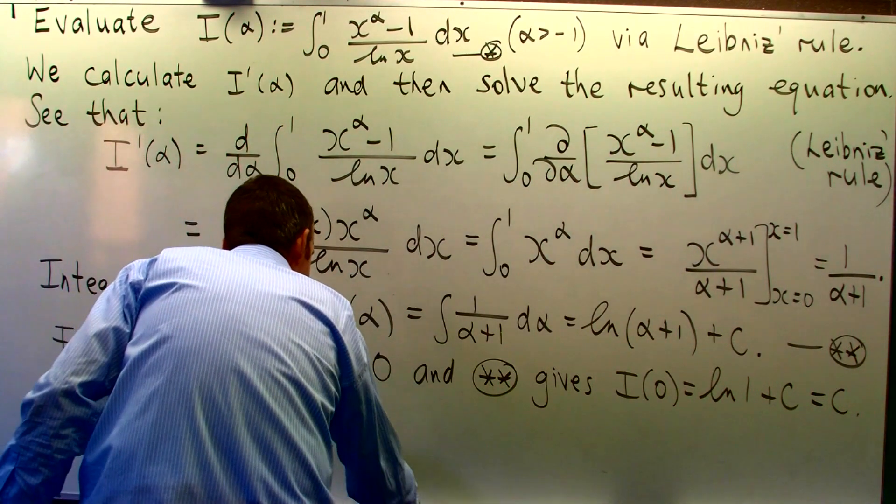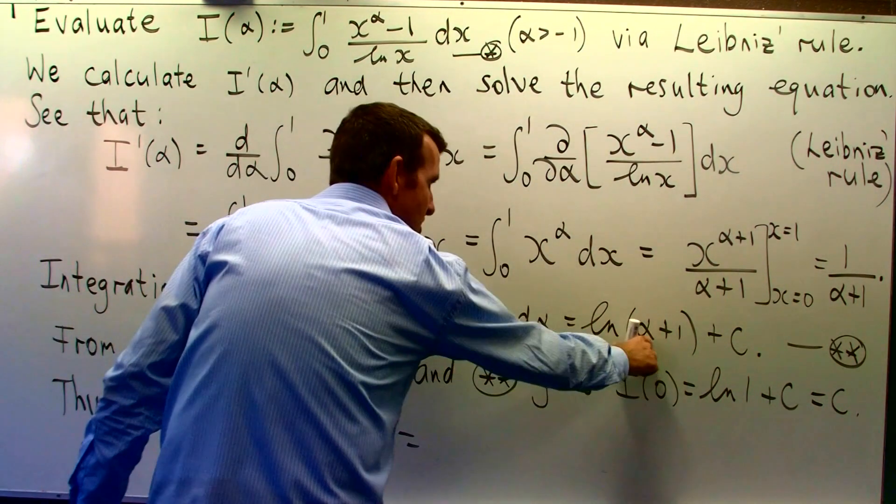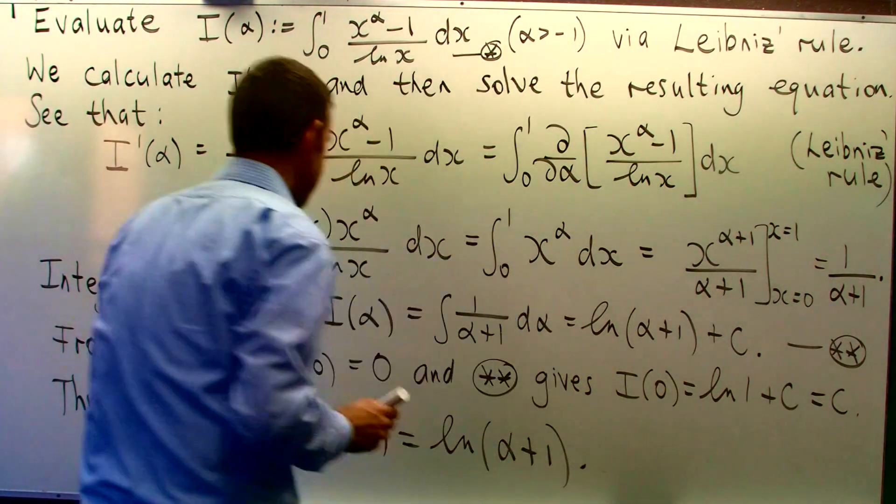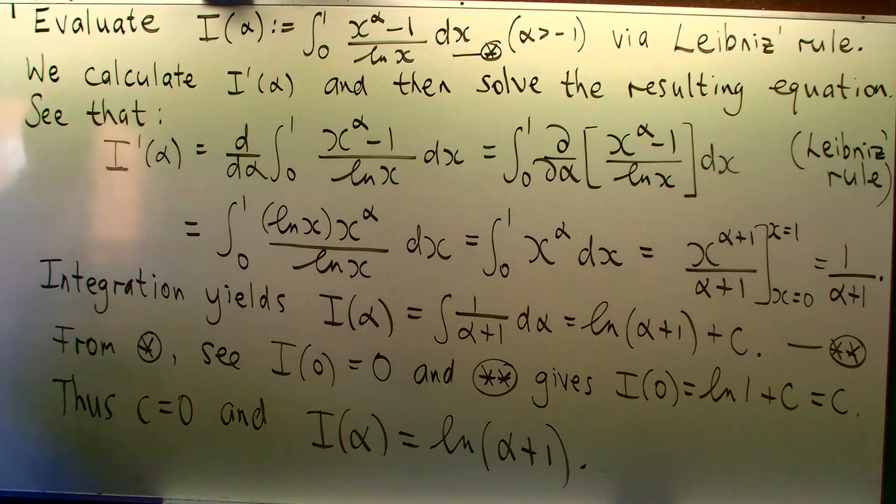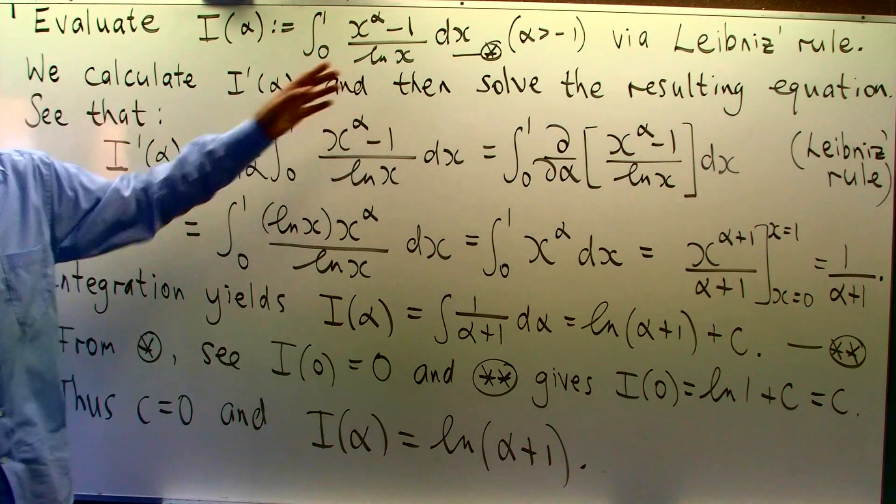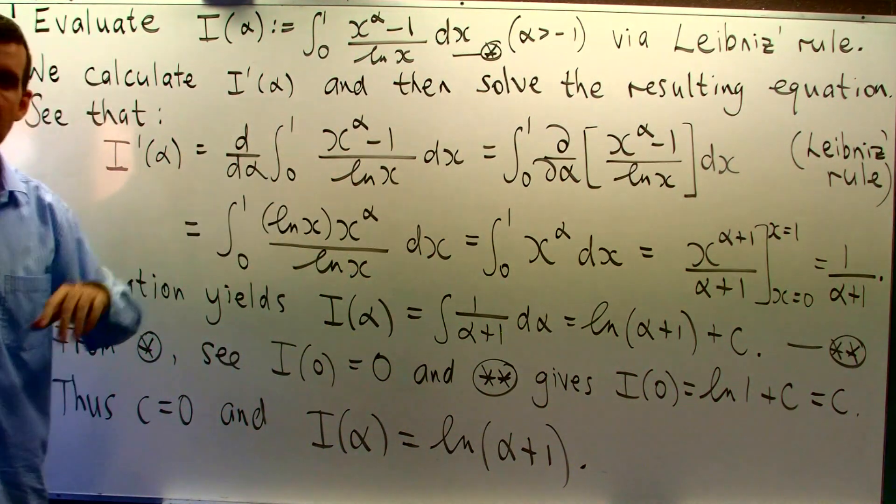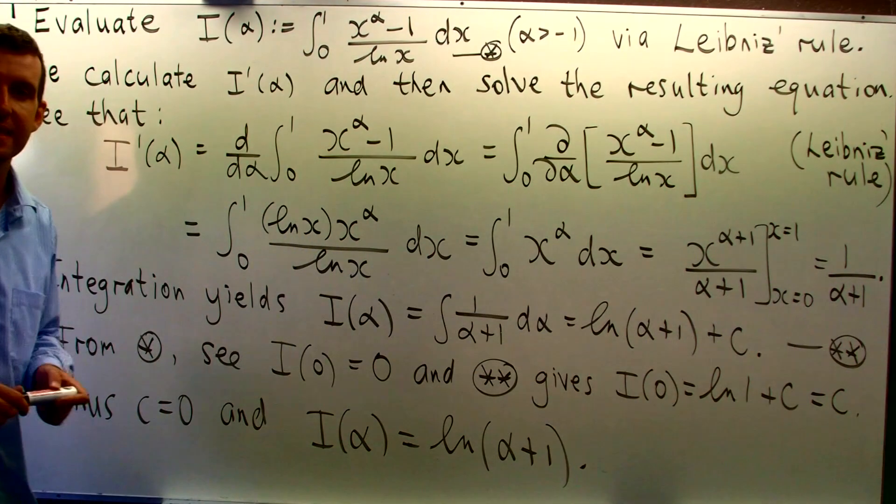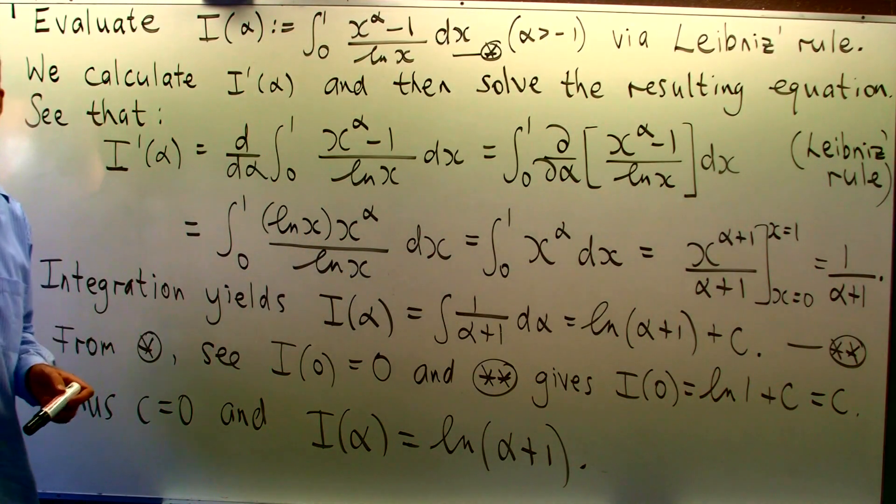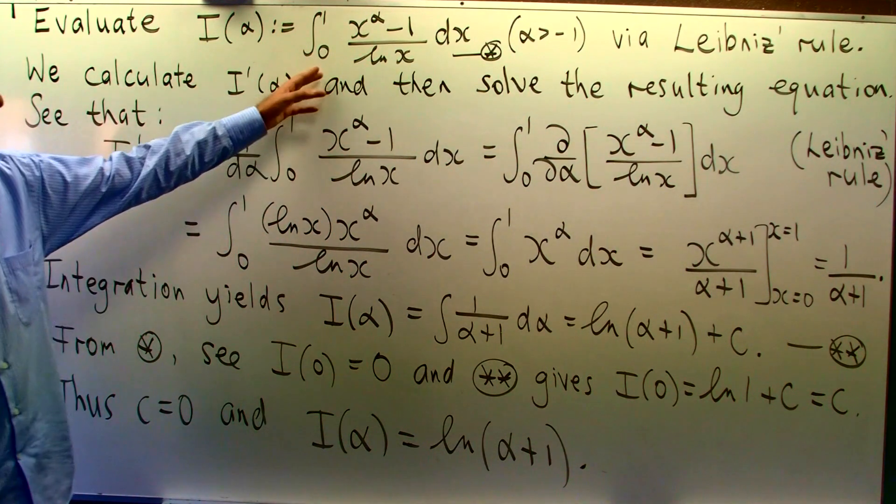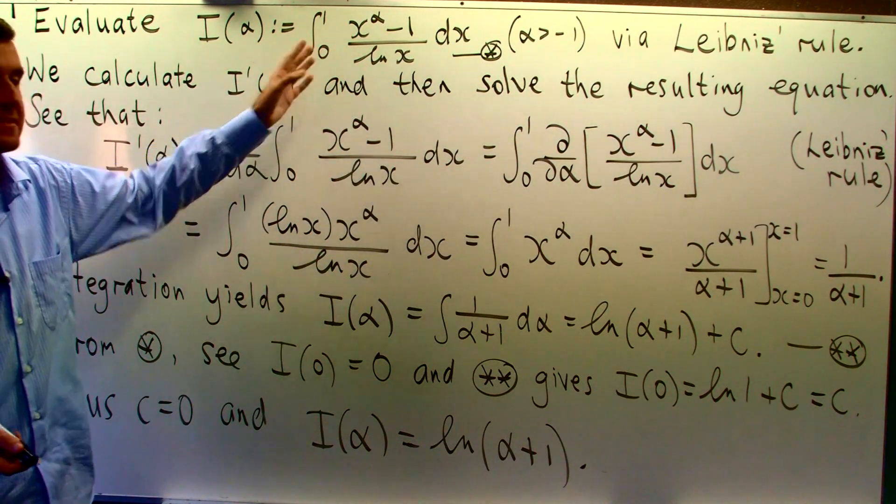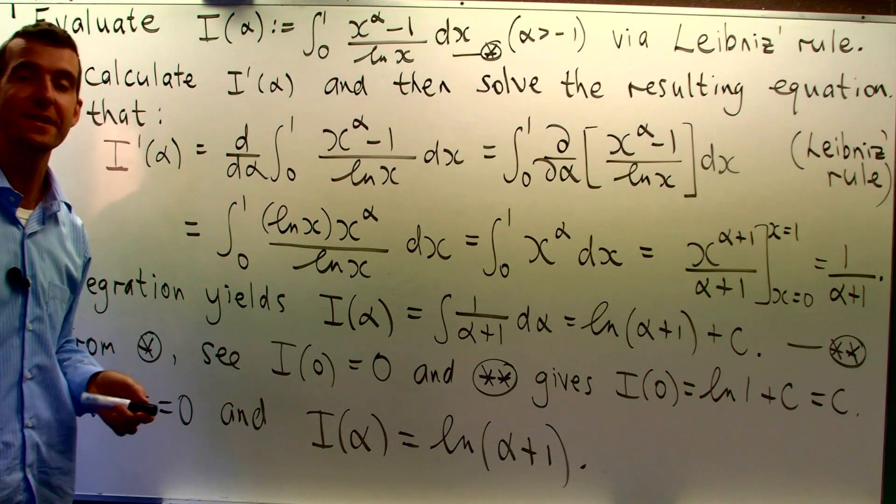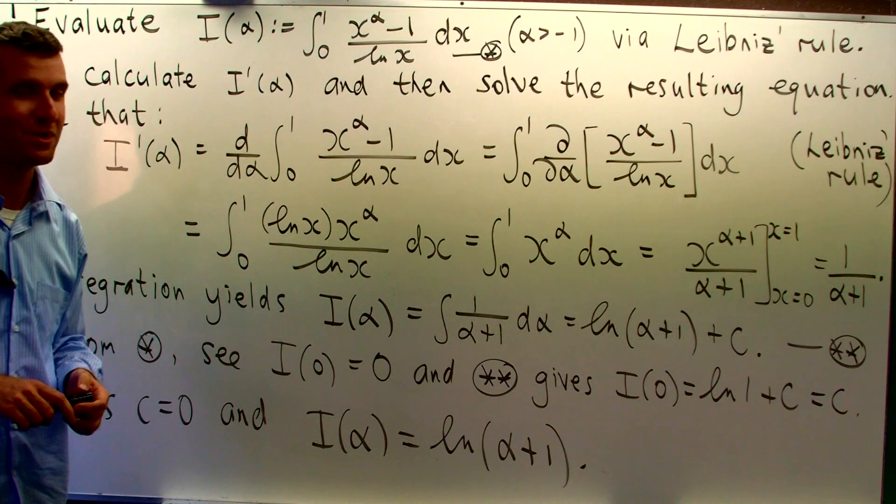So our I(α) is just log(α+1). So we differentiated our given information, solved the resulting differential equation and calculated the constant of integration at the end. Leibniz rule is a fantastic method for computing very difficult integrals like this and much more difficult than this particular one. You can do some horrendous integrals with Leibniz rule very easily.